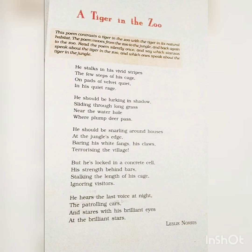First, I will tell you the meanings of the words in this stanza. 'Stalks' means to move quietly or to follow. 'Vivid' means clear or bright. 'Stripes' — you know, the tiger's body stripes. 'Pads' means the paws of the tiger, the soft part under the foot of the tiger. 'Rage' means violent, uncontrollable anger.